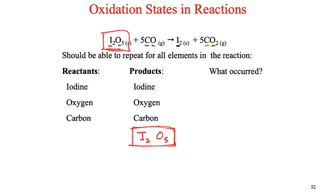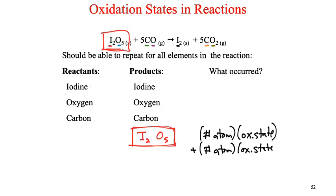We'll take a look at I₂O₅. To determine oxidation state — oxidation state is something you must always calculate. It is never explicitly stated. To determine oxidation state, it is the number of the atom, so how many of them, times the oxidation state, plus the number of the next atom times the oxidation state, plus the number of the next atom, so on and so forth until we've achieved every single atom within that structure.